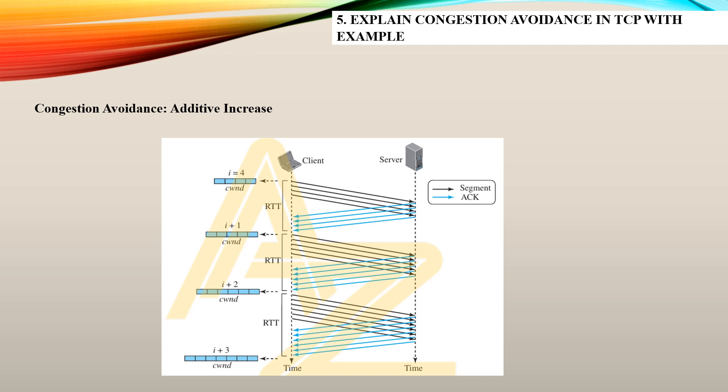Next question: explain congestion avoidance in TCP with an example. Congestion avoidance is done by additive increase. Here is an example with additive increase: the client sends a window where i equals 4, so 4 bytes of data are sent and acknowledgement is received. Then with additive increase, i becomes i plus 1, so 5 bytes are sent, then plus 2, plus 3, and so on, incrementing until all data is sent. This is additive increase.